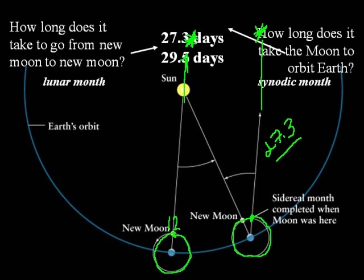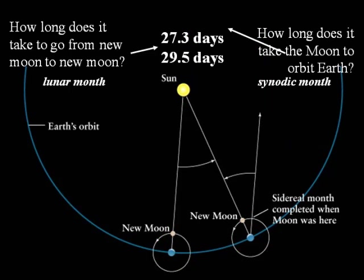So the sidereal month is the time for one revolution compared to the stars, or 360 degrees around the Earth. And the synodic month is the time for a complete cycle of moon phases, measured from new moon to new moon or full moon to full moon. We tend to watch the synodic month happen in the sky; the sidereal month can be observed but is not as easy to watch.